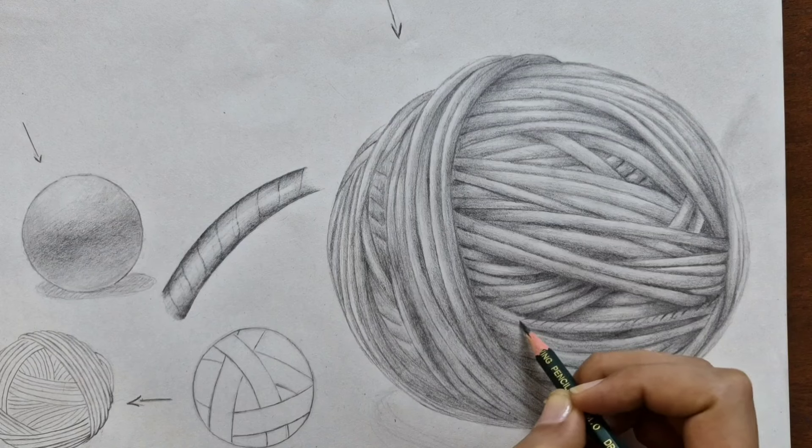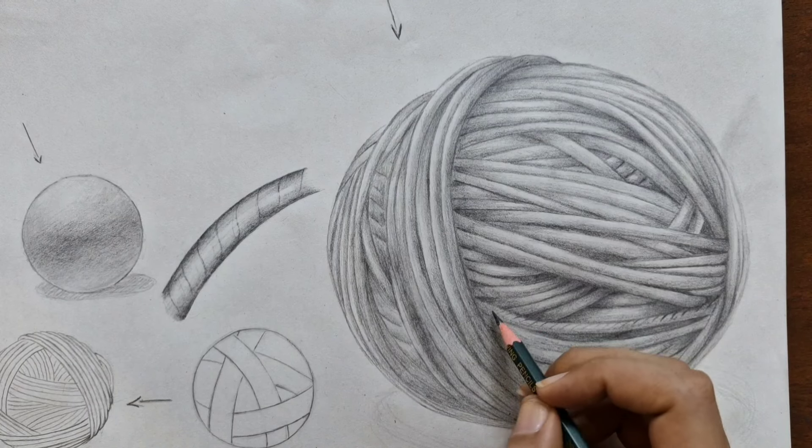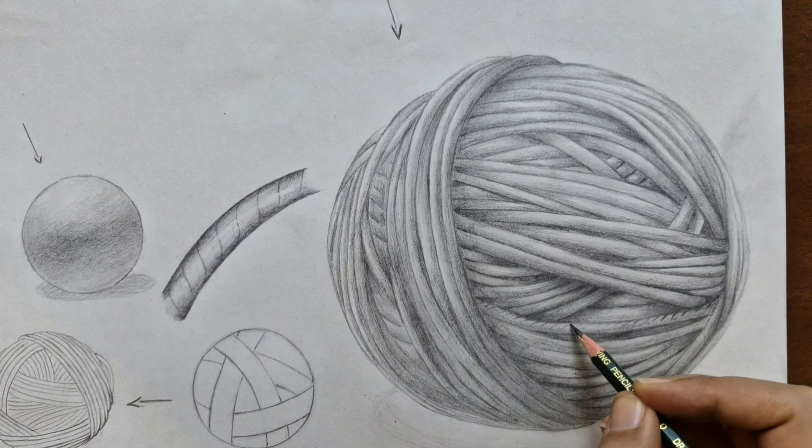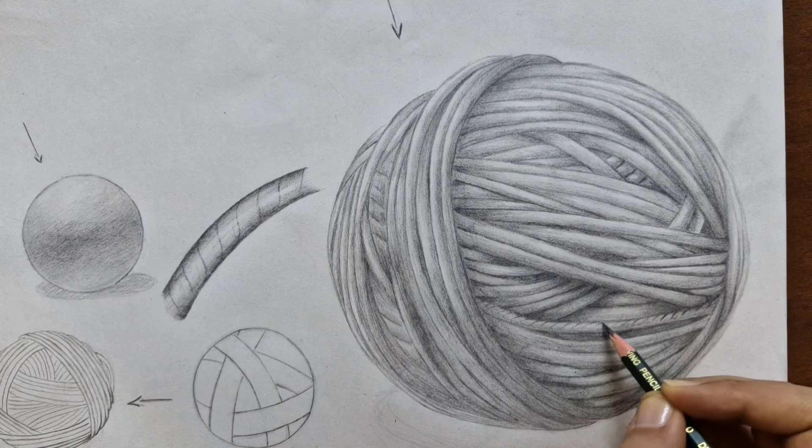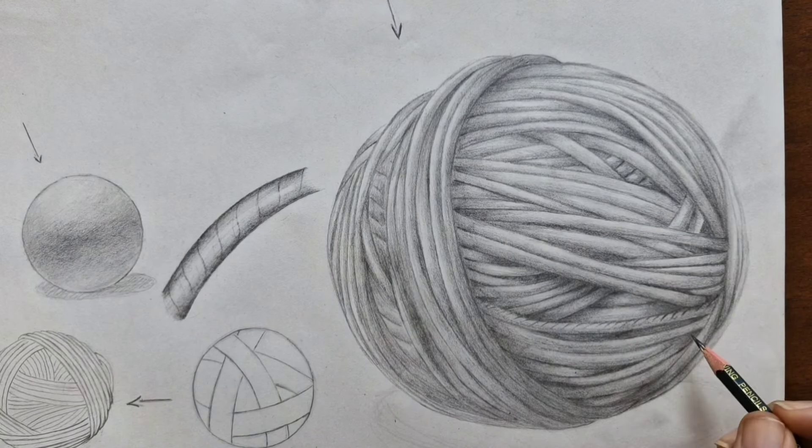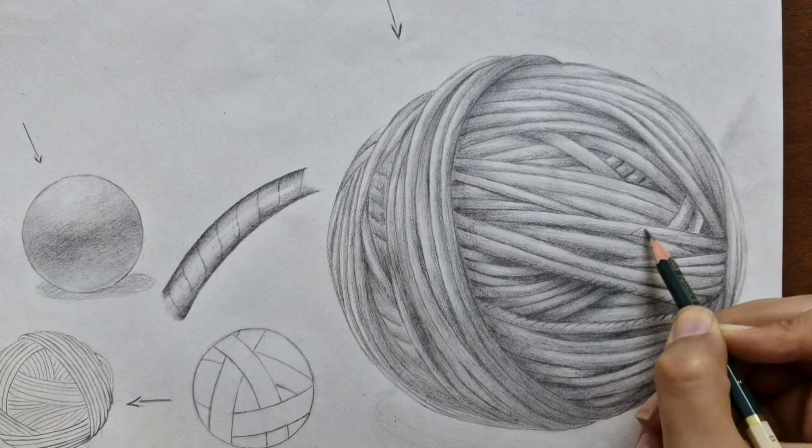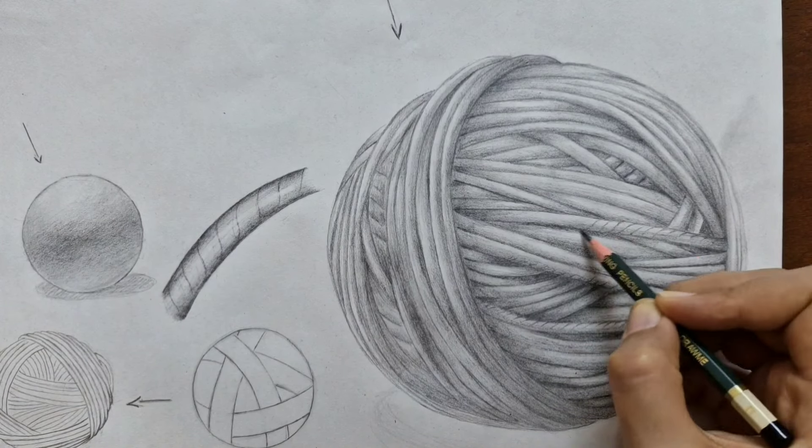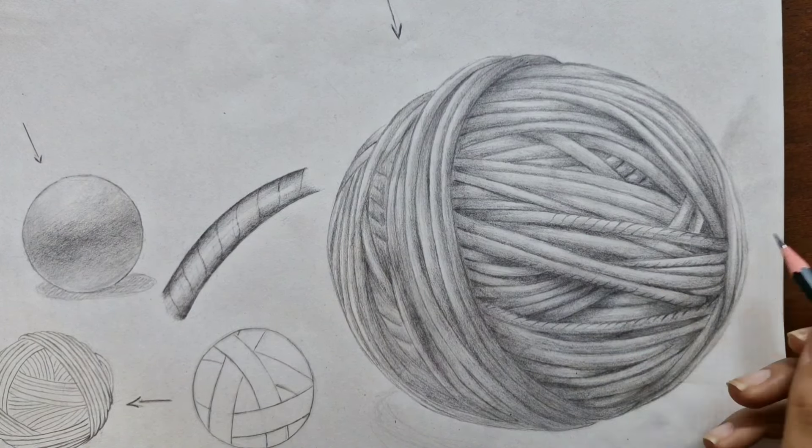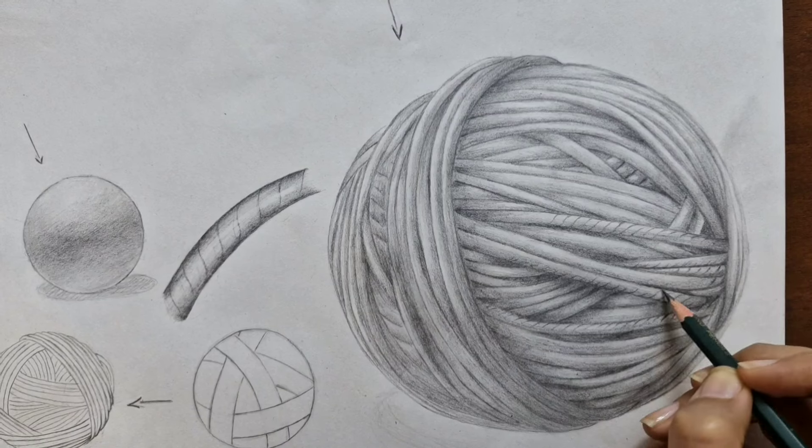For the next step, I'm going to use my B pencil to add some small curved lines along the threads. I'll fill each yarn thread separately, starting to add actual texture to the drawing. I'll use my B pencil for this stage because I want to create some defined lines in specific areas.